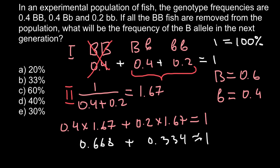In the second generation we have only two genotypes instead of three. The new frequency of the heterozygous genotype is 0.668, and the new frequency of the homozygous recessive genotype is 0.334, or 33.4%. Now we need to find the frequencies of the dominant allele and the recessive allele.